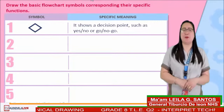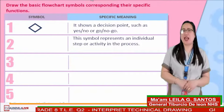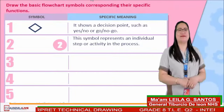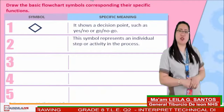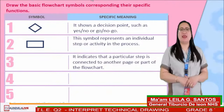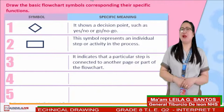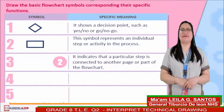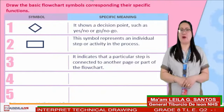Next, item number 2: This symbol represents an individual step or activity in the process. Time's up! Did you draw a box symbol? Great! That is correct! How about item number 3: It indicates that a particular step is connected to another page or part of the flowchart. Time's up! If you drew a circle — awesome! That is correct!